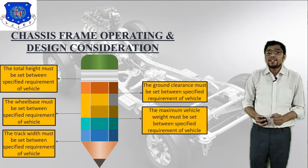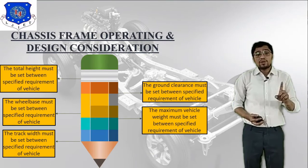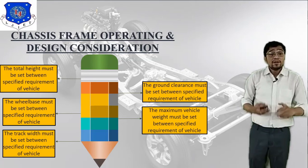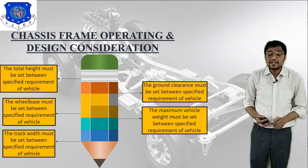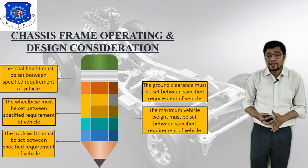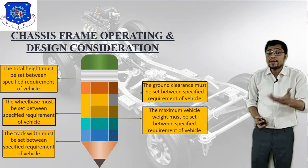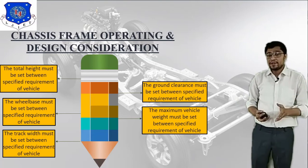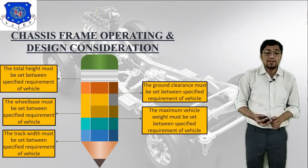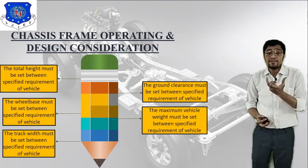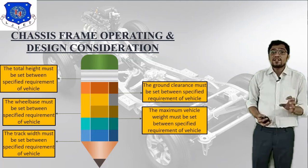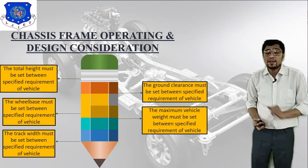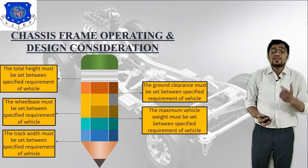Chassis frame operating and design considerations: the first is that the total height must be set between the specified requirements of the vehicle. Second, the wheelbase must be set between specified requirements. Third, the ground clearance must be set between specified requirements. Fourth, the maximum vehicle weight must be set between specified requirements. In chapter three we will also discuss driver seat configuration and passenger seat design calculations.